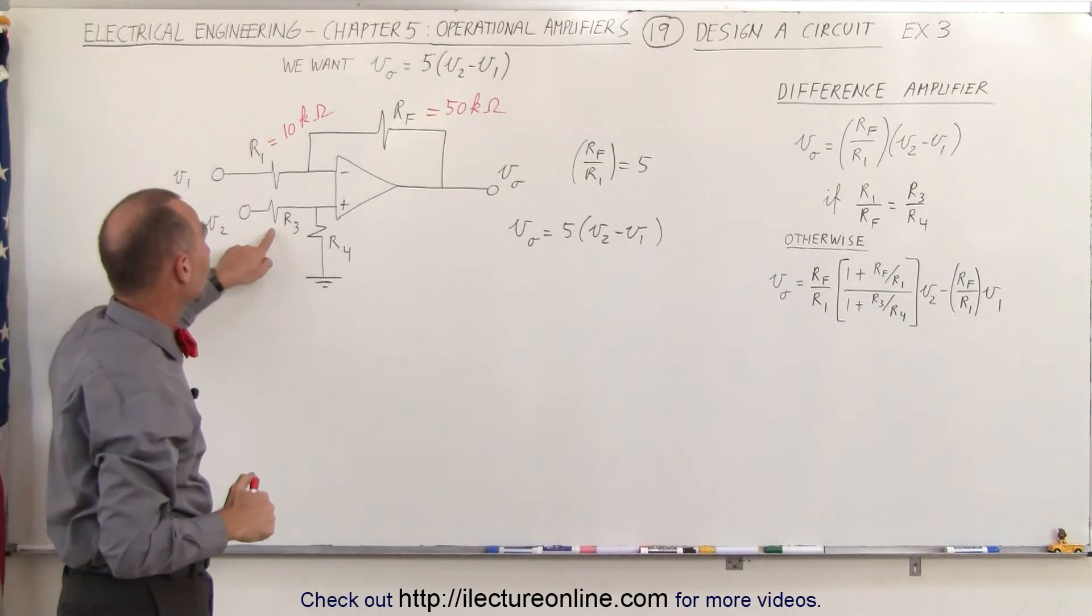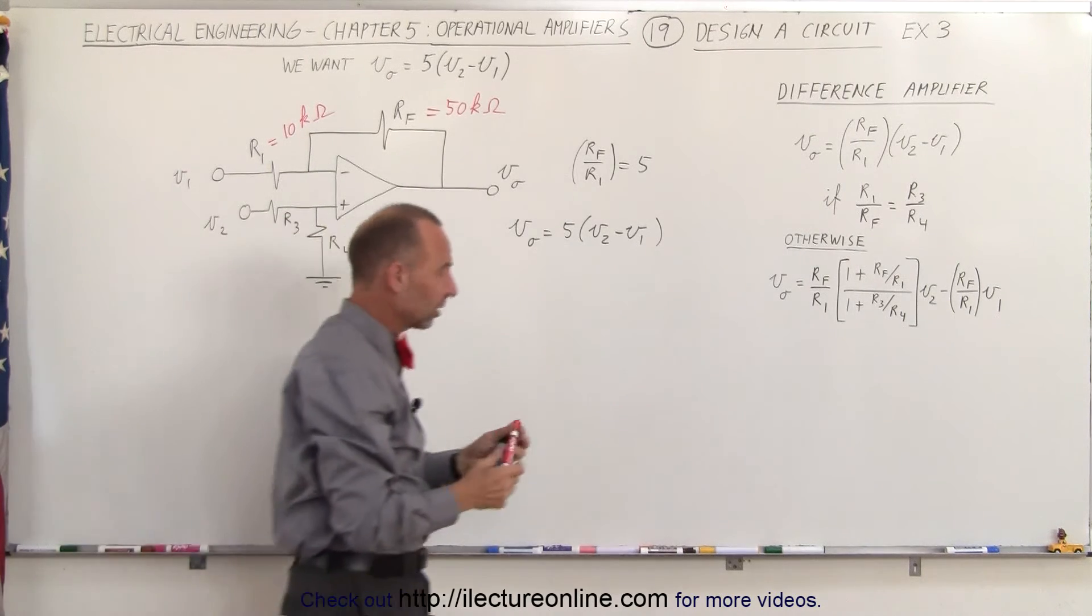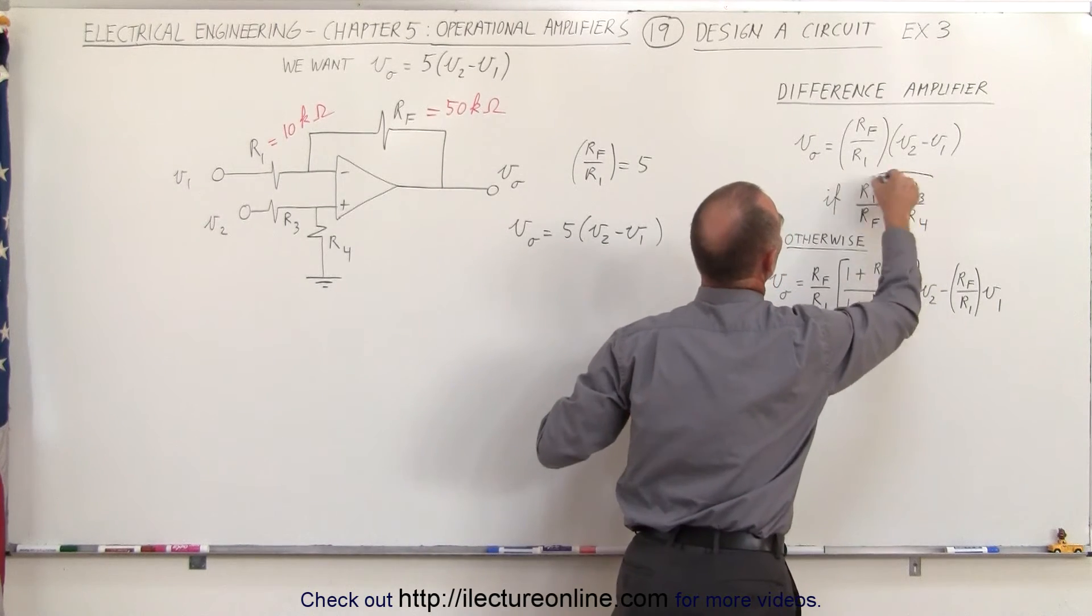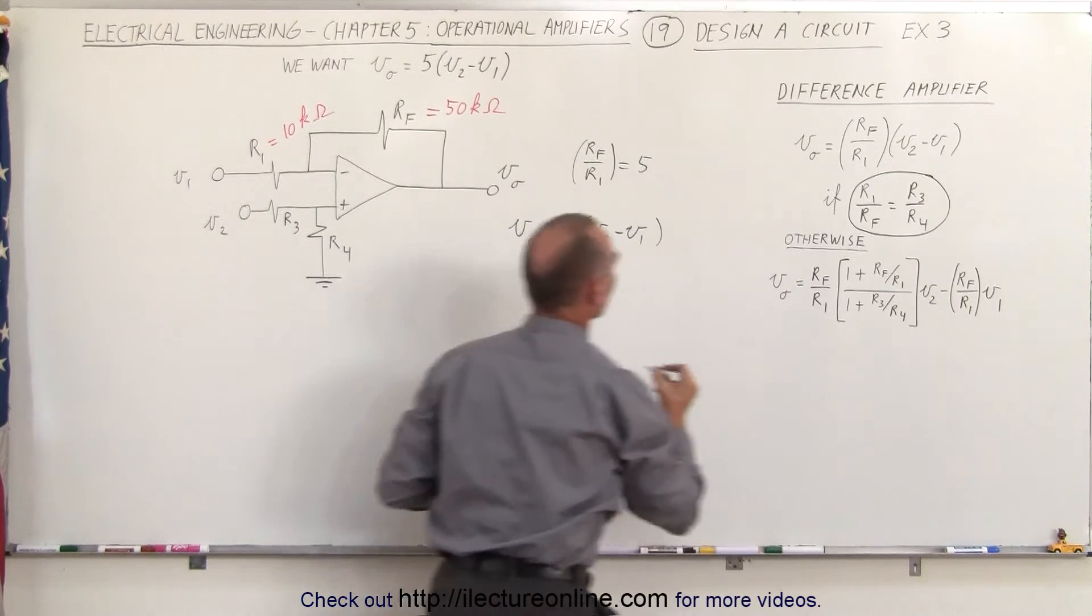Now, how does that determine the size for resistor 3 and resistor 4? Notice that the condition is a requirement that this ratio must be equal to one another.